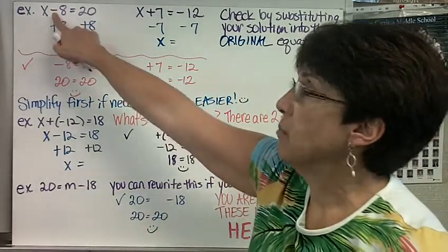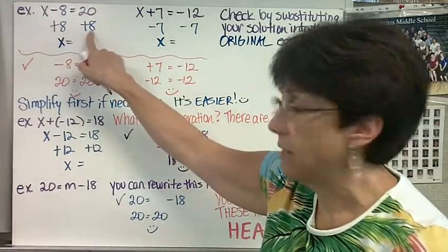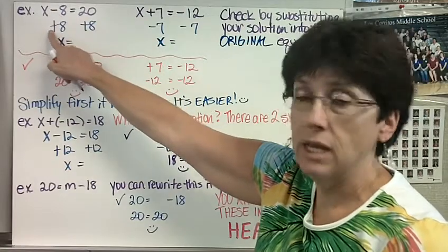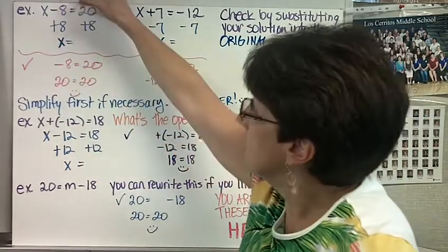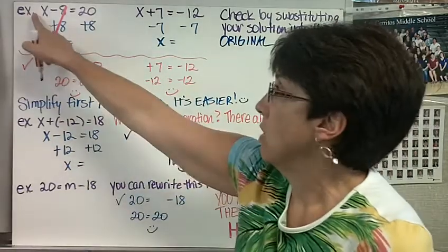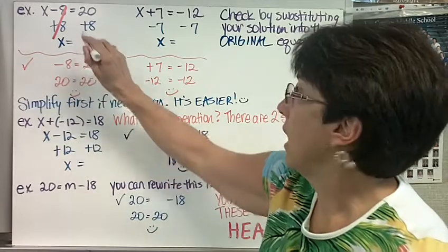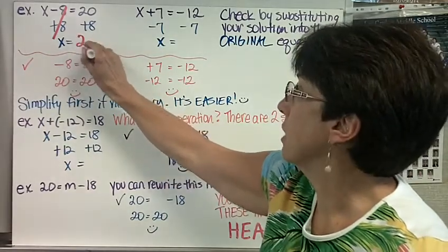So since the operation here is subtraction, the inverse will be addition. We will add 8 to both sides. Negative 8 and positive 8 make 0. So I just cross it out. They cancel each other out. We are left with the x. The equal signs are lined up and 8 plus 20 is 28.